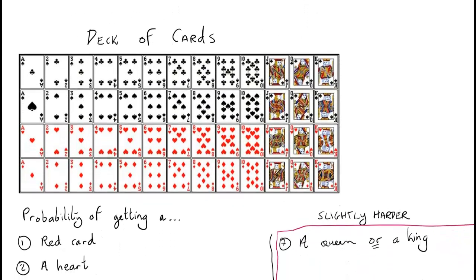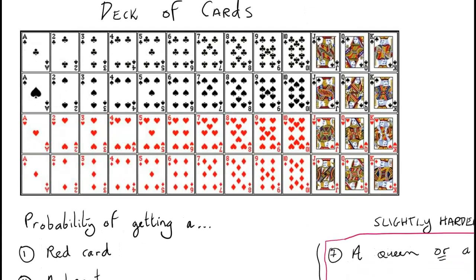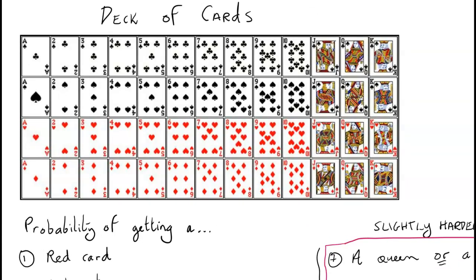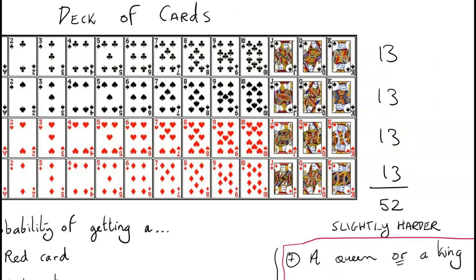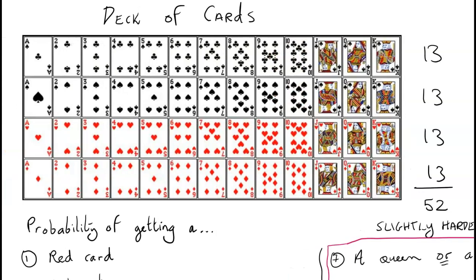The deck of cards is extremely important in probability questions because it comes up repeatedly. A deck has 52 cards in total: 13 clubs, 13 spades, 13 hearts, and 13 diamonds — adding to 52. Those are the 4 suits. Clubs and spades are black; hearts and diamonds are red.